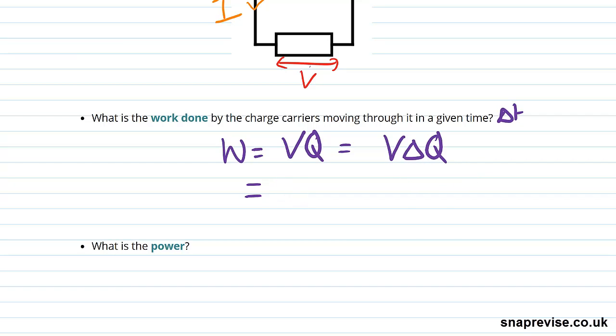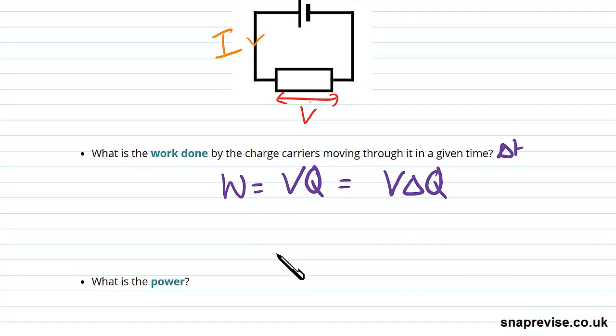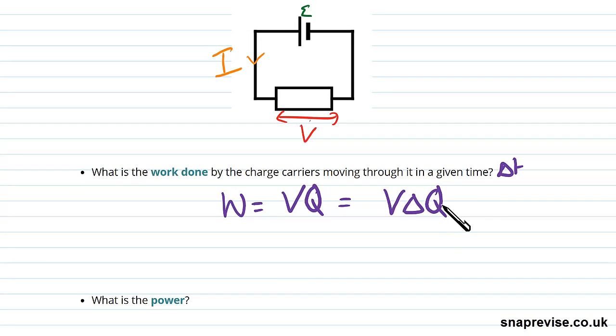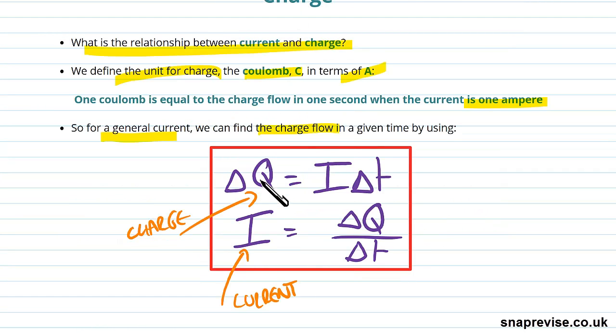So we know what the formula for current is in terms of charge, because remember, we can write Delta Q as I Delta T. The amount of charge passed through a point in a given time Delta T is given by multiplying the current by that time, because current is the flow of charge.